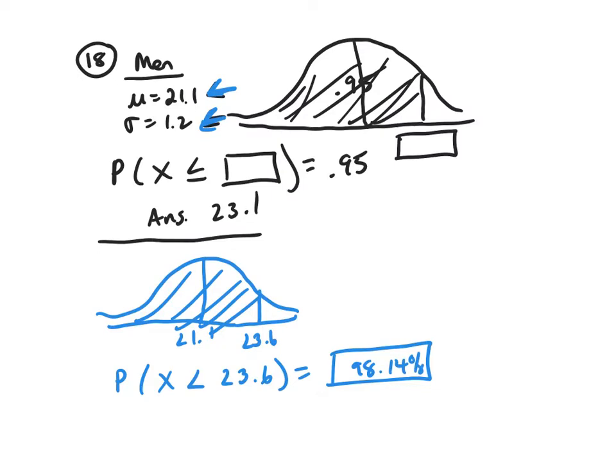And then the next one, what percentage of women fit this table? Well, you're going to do the very same thing, except the mean for women is 19.1, and sigma is 1.1.